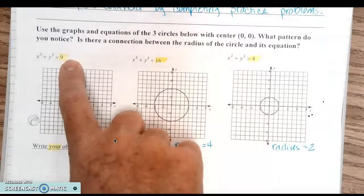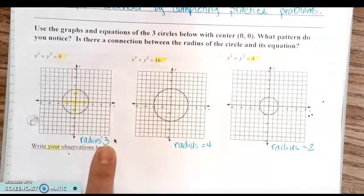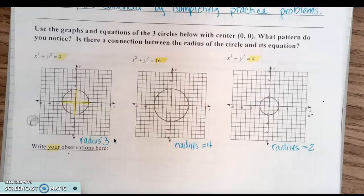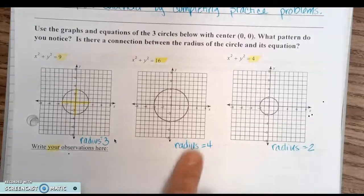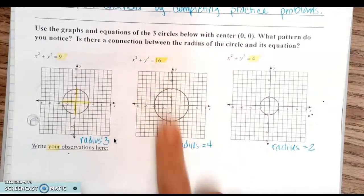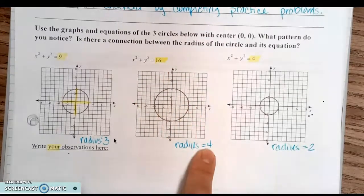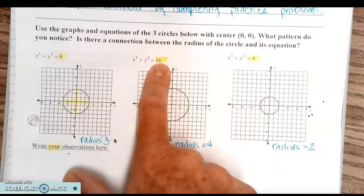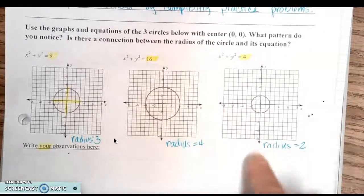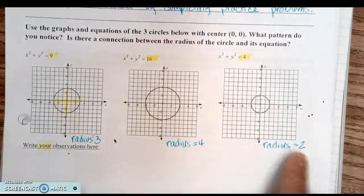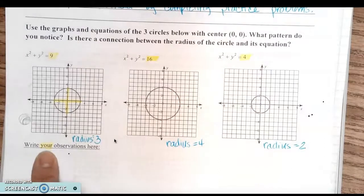Depending on which direction you're going: if you're going from the equation to the radius, you take the square root; if you're going from the radius to the equation, you square it. Let's verify for all three. This one: x² + y² = 16, radius is 4 — square root of 16 is 4. The third one: x² + y² = 4, radius is 2. So the pattern holds for all three.